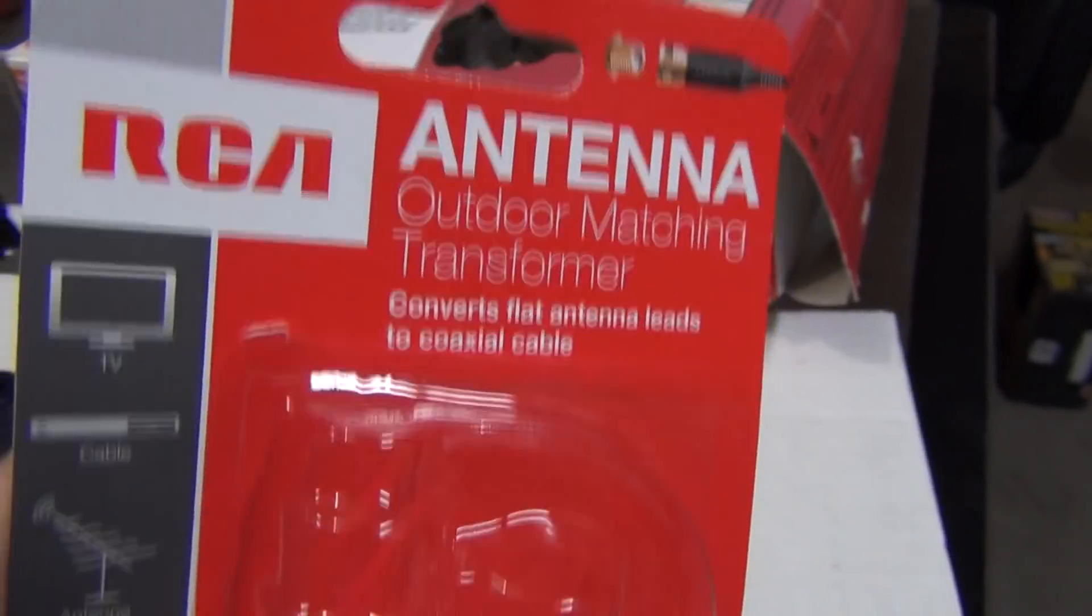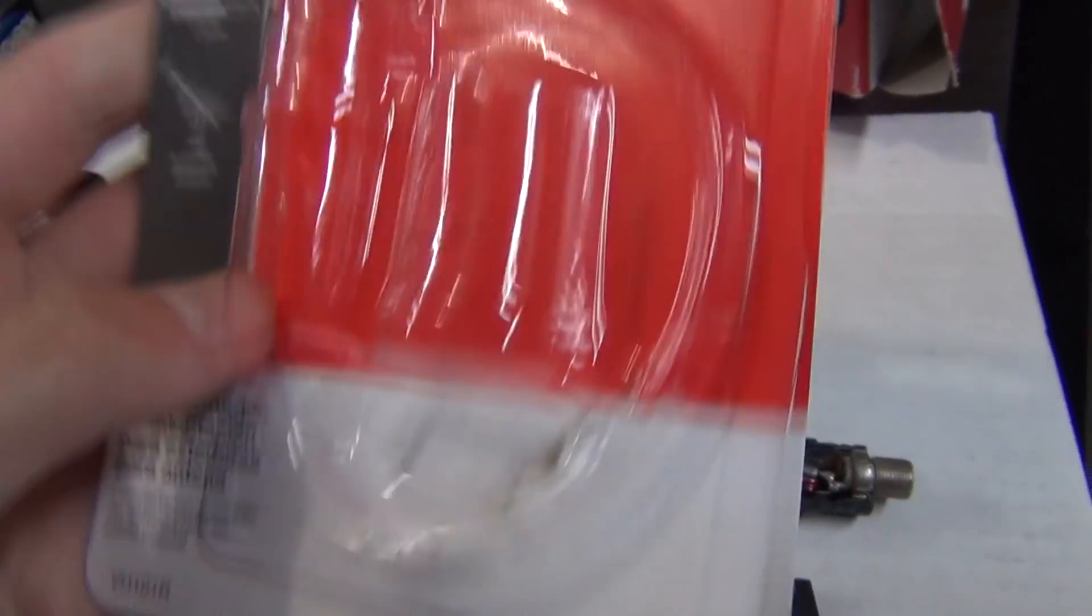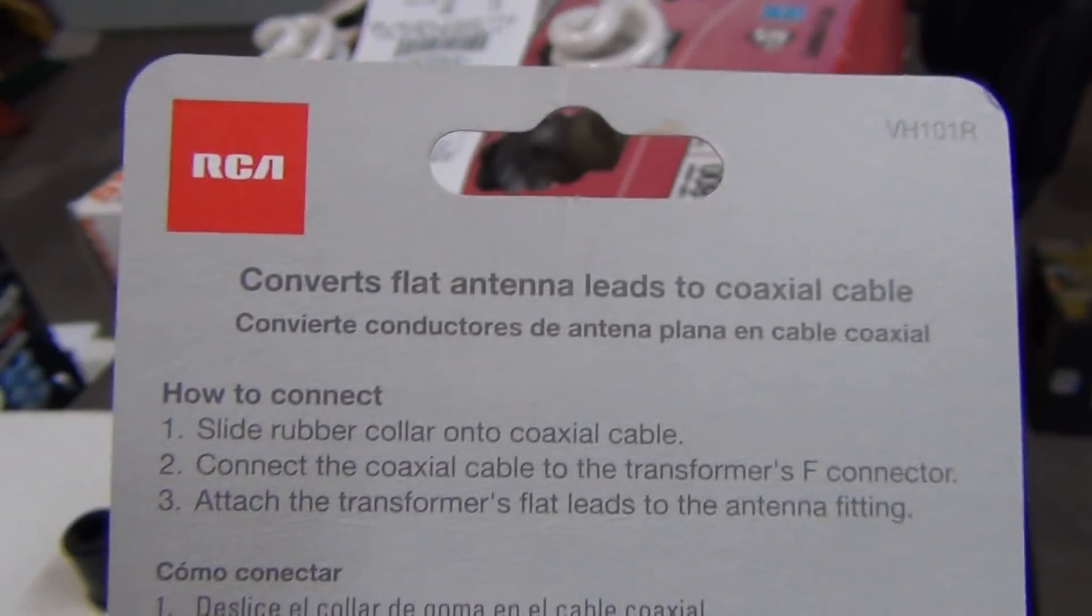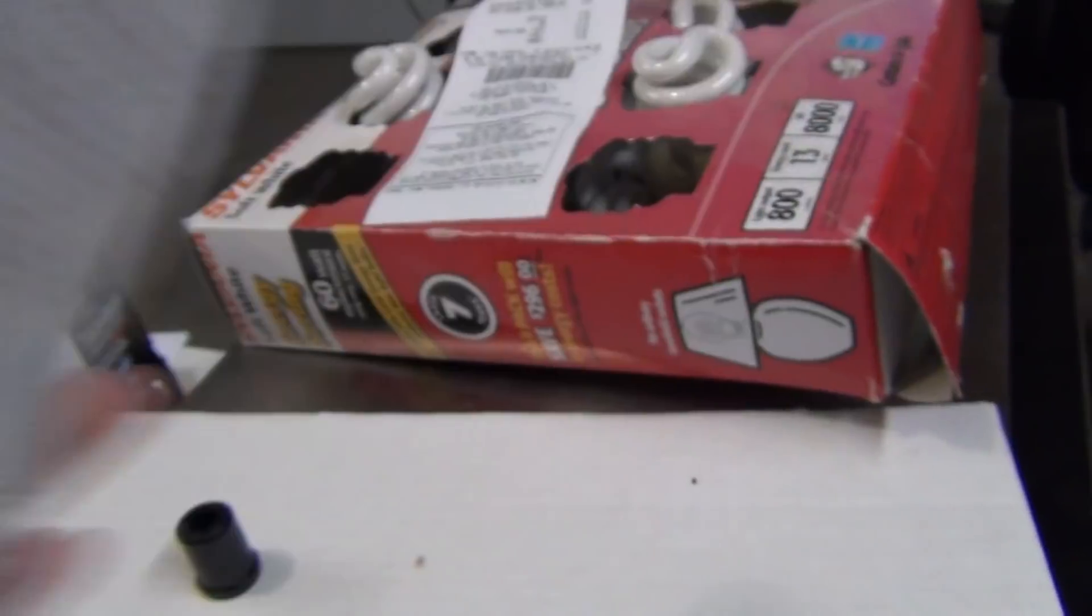It's similar to this model by RC but not the exact model. This is an example of it, and it is used to convert flat antenna leads to coaxial cable, or 300 ohm to 75 ohm.